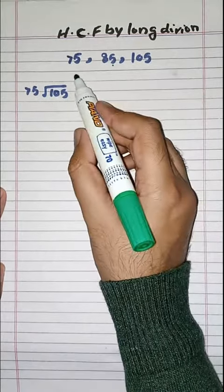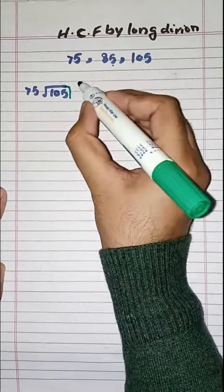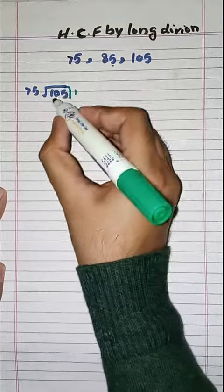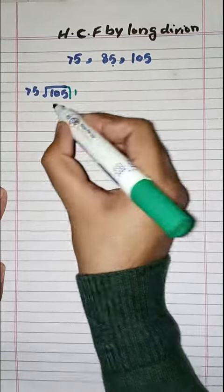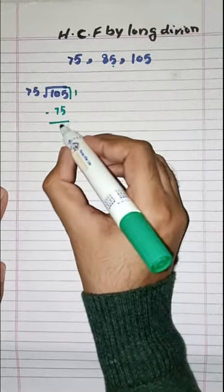So first we find HCF of 75 and 105. Start dividing these two. 75 ones are 75. Minus, we can do it. 5 minus 5 is 0. 10 minus 7 is 3.